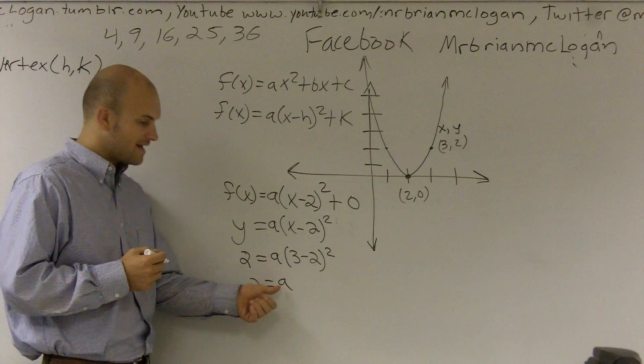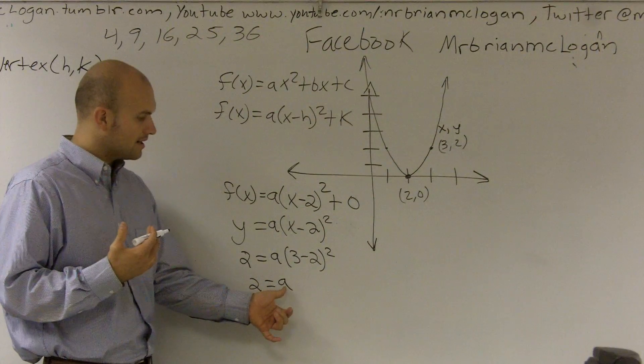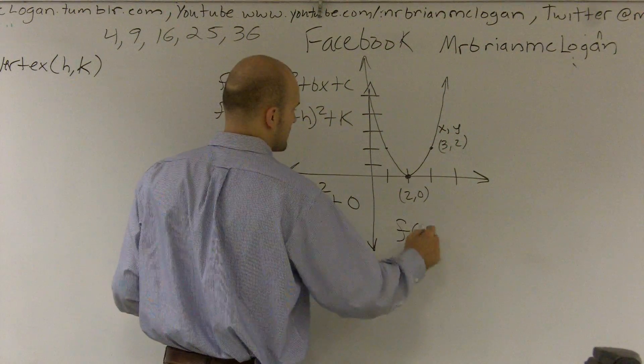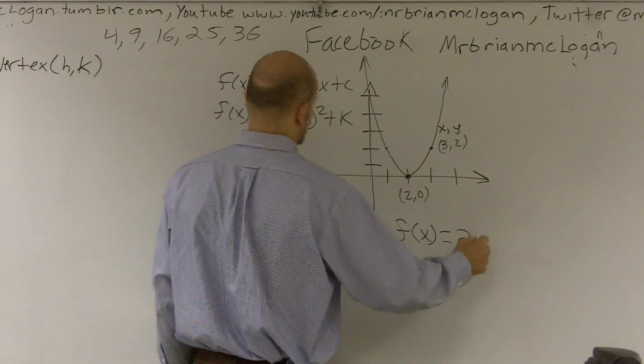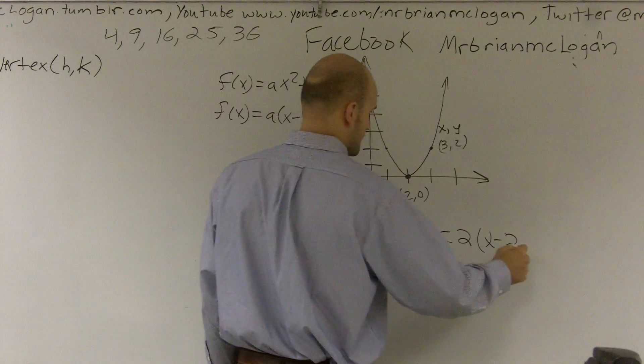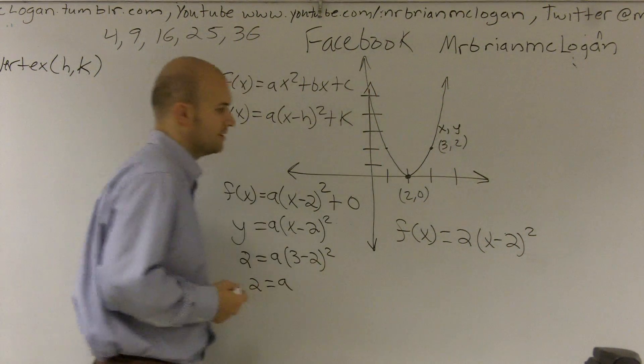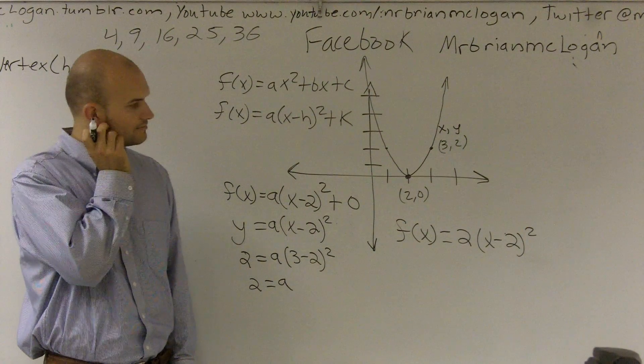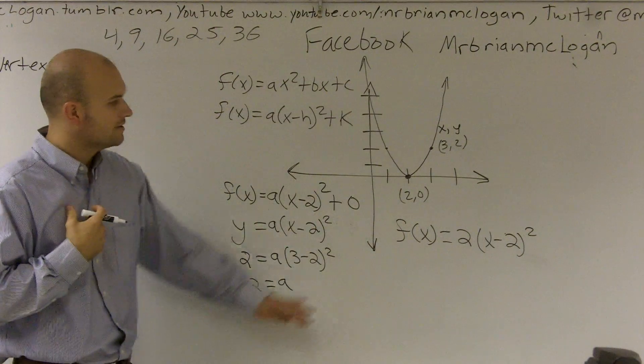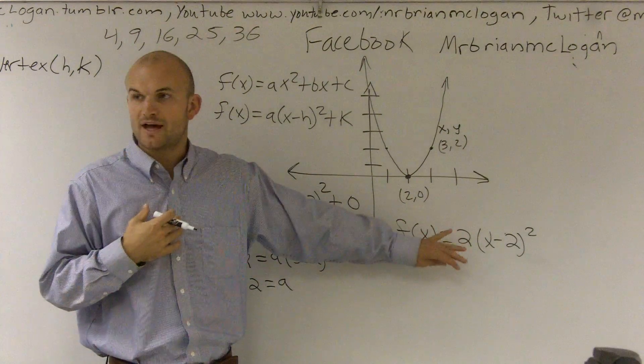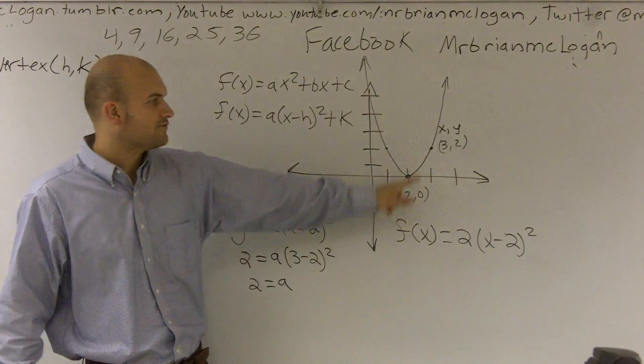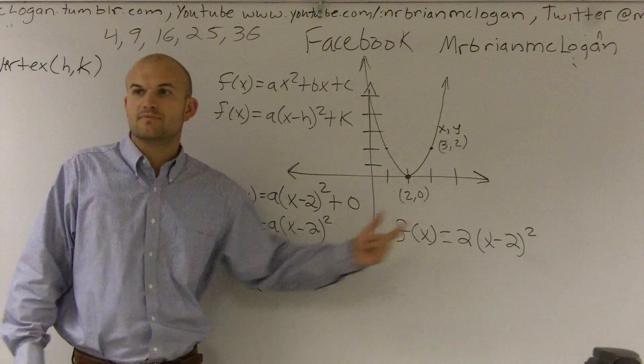So therefore, now I know what my a is. So if I want to write my equation for this function going through this point, it's going to be f of x equals 2(x minus 2) squared, and then plus 0. And that's pretty much everything you want. There is a little disclaimer as far as finding other values for a. But as far as it going through this point and using this vertex, all you really need to do is plug in your vertex and your point and find your value for a.